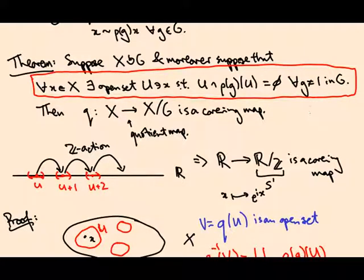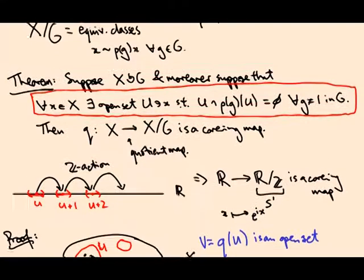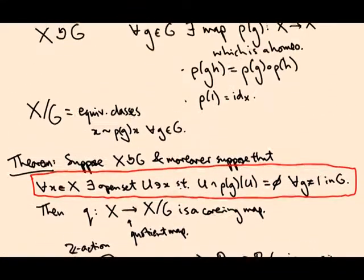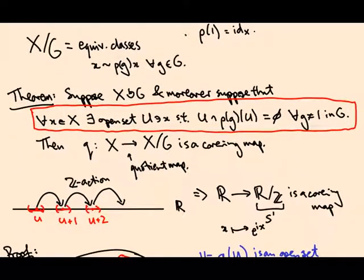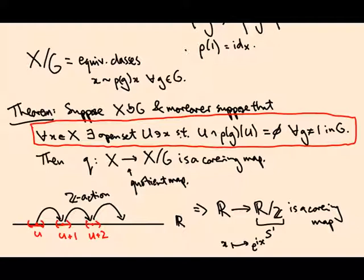This criterion has a name: it's called proper discontinuity of the group action. I don't like that name because it's a continuous group action and you're calling it properly discontinuous, but that's what people call it. It's a really useful criterion. Now I want to give a bunch of examples to which you can apply this theorem — ways of checking where this properly discontinuous condition holds.